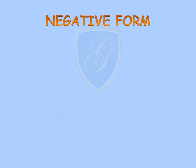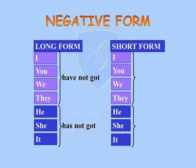Let's have a look at the negative form. The negative form is divided into two parts: long form and short form. Let's have a look at the long form first. I have not got, you have not got, we have not got, they have not got, he has not got, she has not got, it has not got.